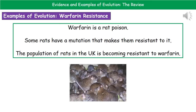The third and final example is warfarin resistance. Warfarin is a rat poison that has been used for many years. Some rats have a mutation that makes them resistant to it so it doesn't kill them. Looking at the rat population in the United Kingdom, there is an ever-increasing number of rats that are resistant to warfarin, meaning the poison we've used for many years just isn't effective anymore.